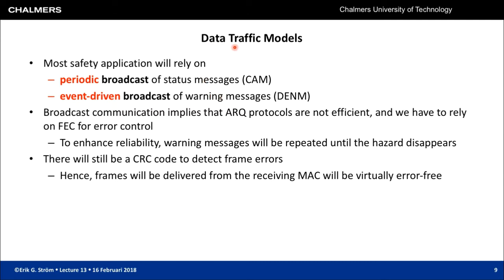What data traffic models are needed for cooperative traffic safety applications? Most safety applications rely on two types. First: periodic broadcast of status messages, which contain the vehicle's position, speed, heading, and so forth. These are transmitted regularly with some periodicity — maybe 100 milliseconds between messages — and are periodically triggered.